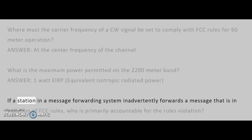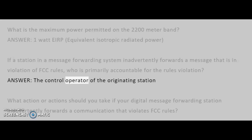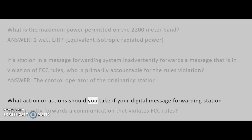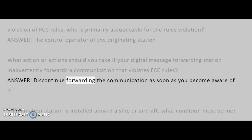If a station in a message forwarding system inadvertently forwards a message that is in violation of FCC rules, who is primarily accountable for the rules violation? Answer: The control operator of the originating station. What action should you take if your digital message forwarding station inadvertently forwards a communication that violates FCC rules? Answer: Discontinue forwarding the communication as soon as you become aware of it.